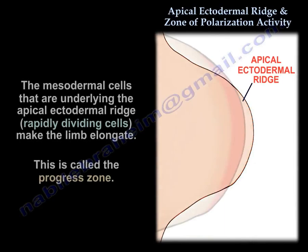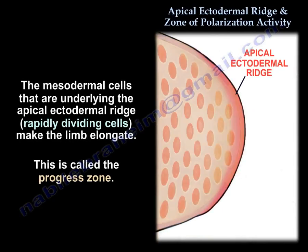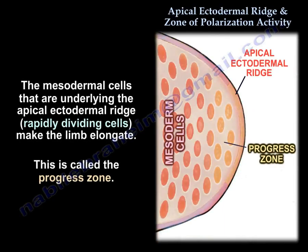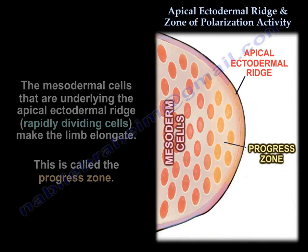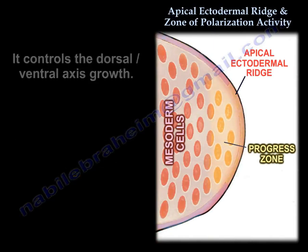The mesodermal cells underlying the Apical Ectodermal Ridge are rapidly dividing cells that make the limb elongate; this region is called the progress zone. The progress zone controls the dorsal-ventral axis growth.